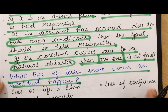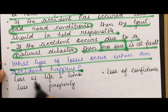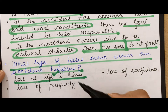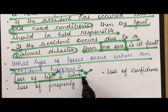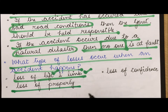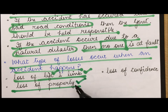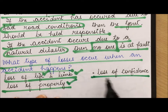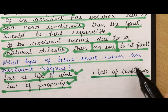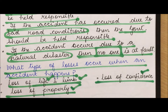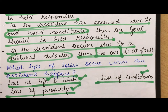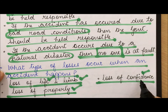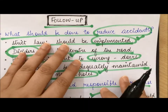The next question is: what types of losses can occur when an accident happens? The first is loss of life and limb — someone might die or lose a limb, break an arm or leg, or lose an eye or ear; they can be severely injured. The second is loss of property — your car, truck, scooter, or bike may be damaged. The third is loss of confidence — after an accident, a person may feel they cannot drive properly anymore due to the stress and trauma involved.